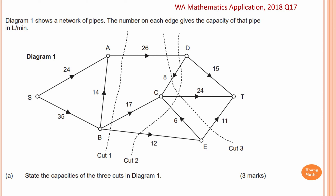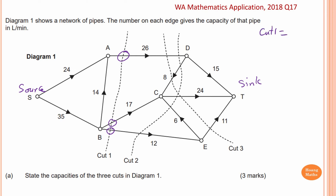Please stop the video and try this one yourself. The source and sink are identified. For cut one, three edges go straight from the source and are all cuts. Cut one equals 26 plus 17 plus 12, which equals 55 liters per minute.